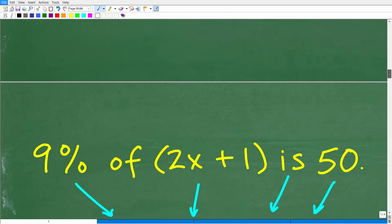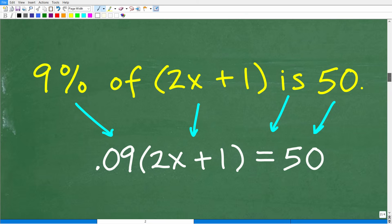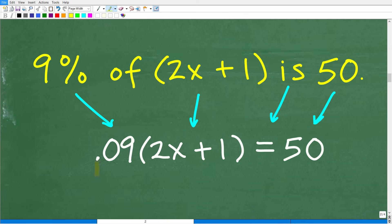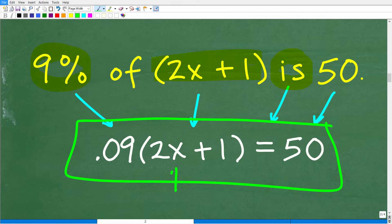There's a much better way to solve this problem, and that involves algebra. Here we have 9% of 2x plus 1 is 50. Let's see if you can set up an algebraic equation to solve this problem. I'm not going to solve the equation just yet, but let's see if you can use everything that I just showed you to set up or translate this problem into an equation. Remember the word 'is' is the equal sign in mathematics. Let's go ahead and take a look at the answer.